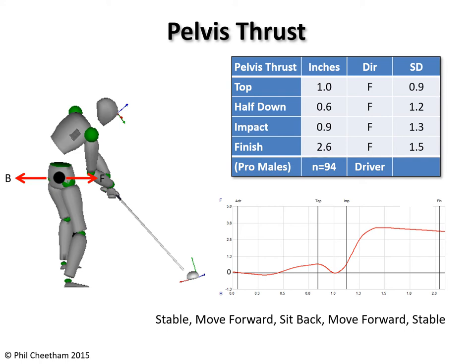This is a typical tour pro shaped curve. Initially there is little forward or backward thrust. Then the golfer pivots around the trail leg and the pelvis center moves a little forward. By the top of the backswing it is about one inch or 2.5 centimeters forward. During the first part of the downswing the pelvis moves back by about half an inch or 1.25 centimeters.